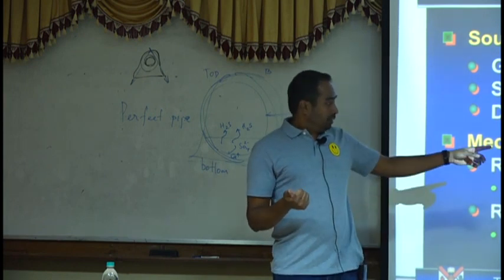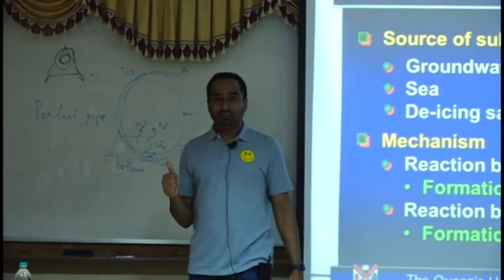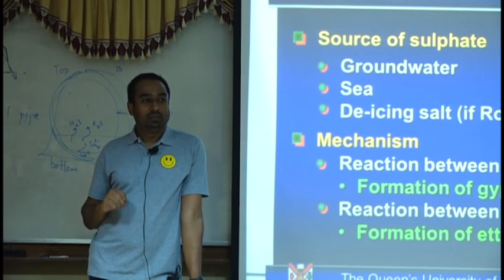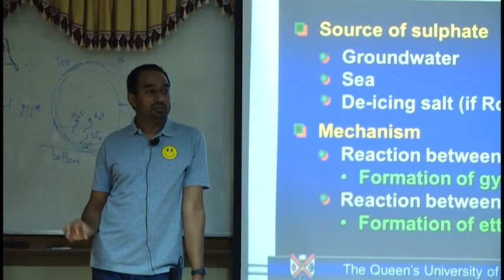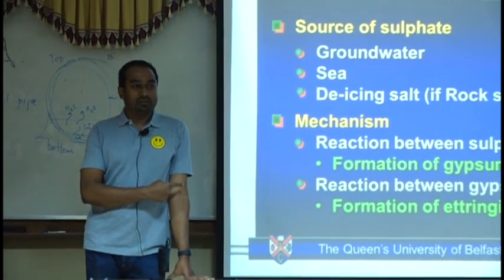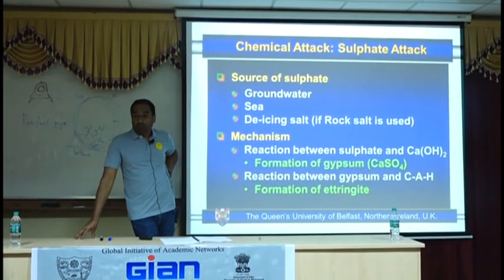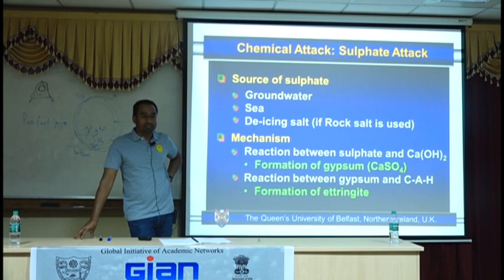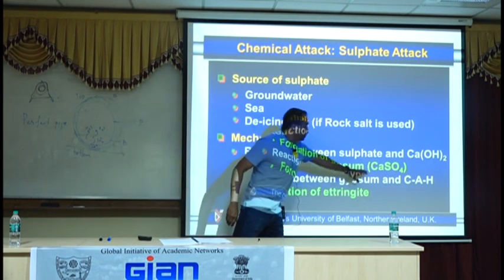Every cement you can name has tons and tons of calcium in it — it's fully loaded with calcium. What if you take a cement which has no calcium in it? That reaction can't happen. Potassium sulfate is a very soft material; it doesn't have the same reaction potential. But if you make a concrete system out of sodium or potassium, then this reaction won't happen.